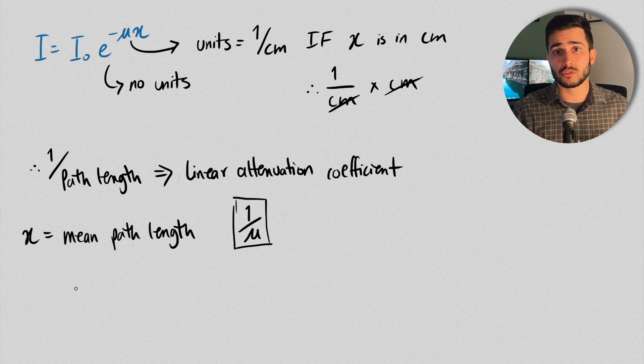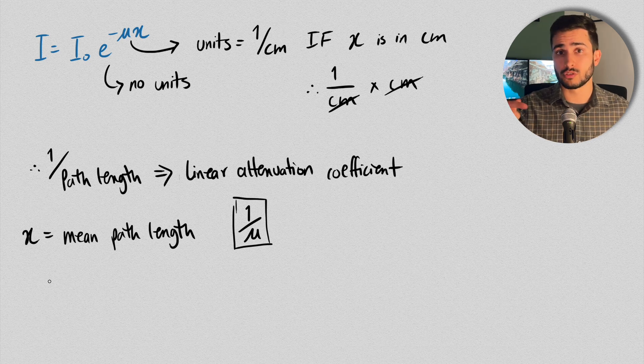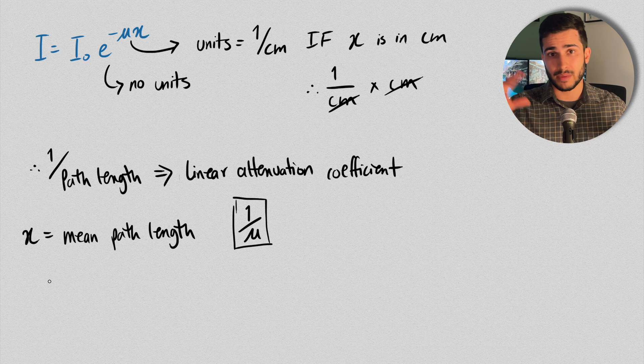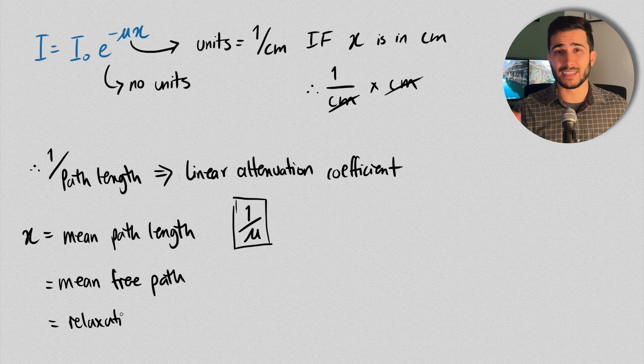Now, the X in the formula is referred to as the mean path length, which is the average distance traveled by the X-rays before it interacts with anything, and it's given by 1 over μ, where μ is the linear attenuation coefficient. And this makes sense, because we said that μ itself has a unit of 1 over centimeters. So if you just swap them out mathematically, you get centimeters on its own, which is just the path length. By the way, this is sometimes also called the mean free path, or the relaxation length.